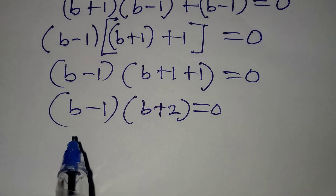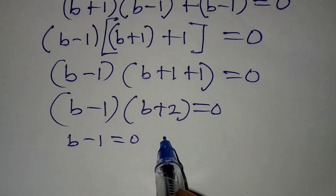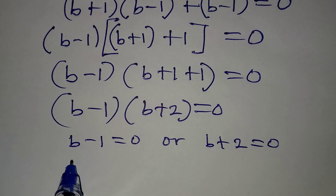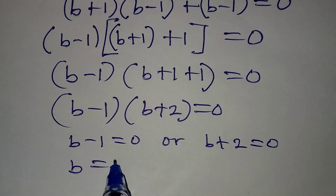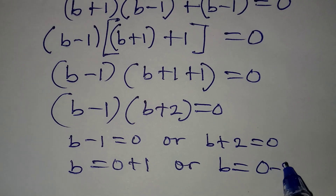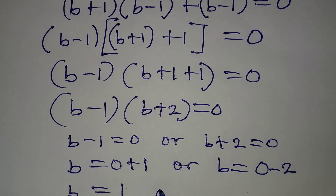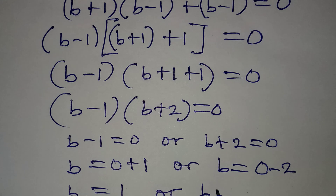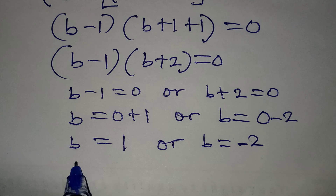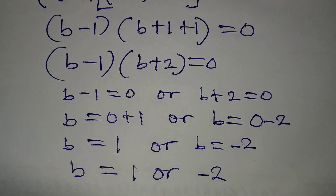Now apply the zero product rule: either b minus 1 equals 0, or b plus 2 equals 0. From the first, b equals 1. From the second, b equals negative 2. So our solutions are b equals 1 or b equals minus 2.